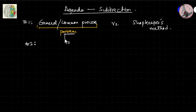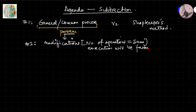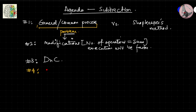The second method involves modifications to the way we deal with subtraction. The number of operations will be the same, but execution will be faster. The third method is DNC — Divide and Conquer — which is very important at times. The fourth method will be subtrahend modification.